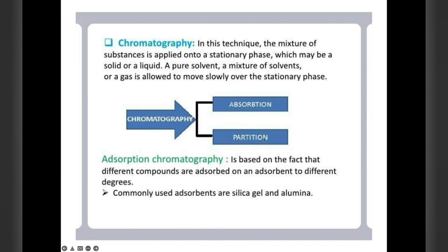Chromatography is divided into adsorption and partition chromatography. Adsorption chromatography is based on the fact that different compounds are adsorbed on an adsorbent to different degrees. We commonly use adsorbents like silica gel and alumina.